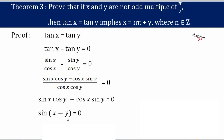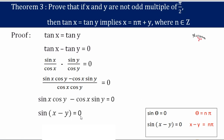Now, sin x · cos y − cos x · sin y is nothing but sin(x − y) from the sine subtraction identity, so sin(x − y) = 0. This is in the form sin θ = 0, where θ = x − y. For sin θ = 0, we have θ = nπ.